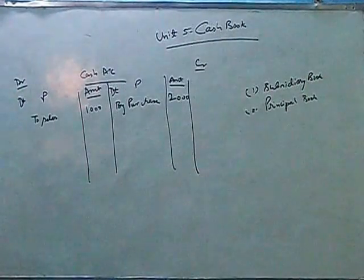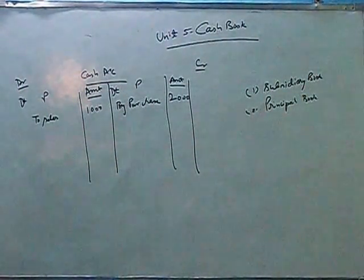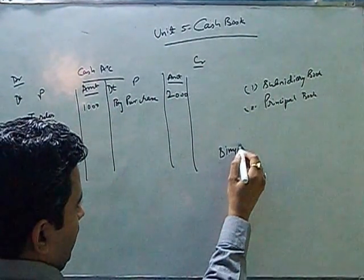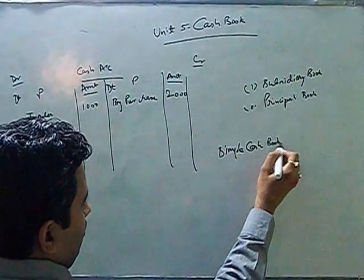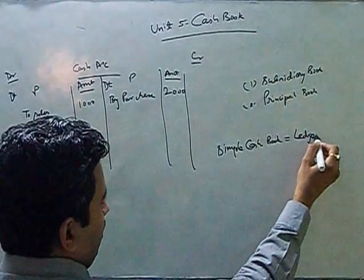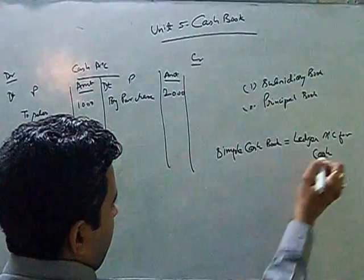Now there are three types of cash book. Simple cash book, two column cash book and three column cash book. This is what we have done over here is a simple cash book which is just like a ledger. So a simple cash book is equal to a ledger account for cash transactions.